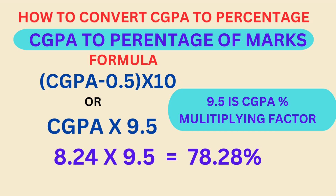Here I am taking CGPA as 8.24. 8.24 into the multiplying factor 9.5, we are getting 78.28 percent, or approximately 78 percent. So this 78 percent is CGPA to percentage of marks. In this way we convert CGPA to percentage of marks.